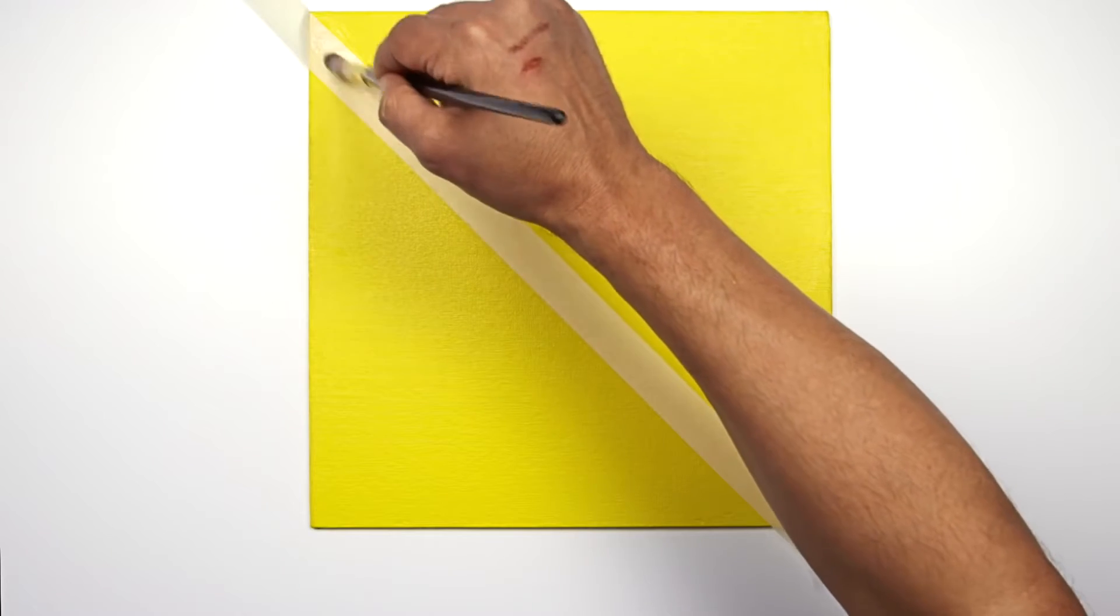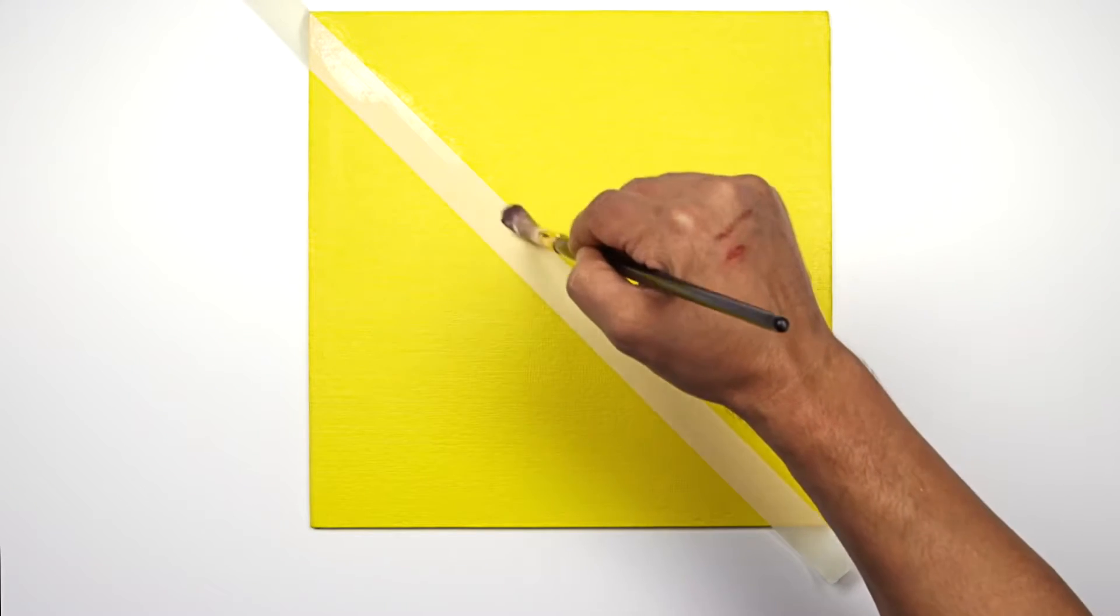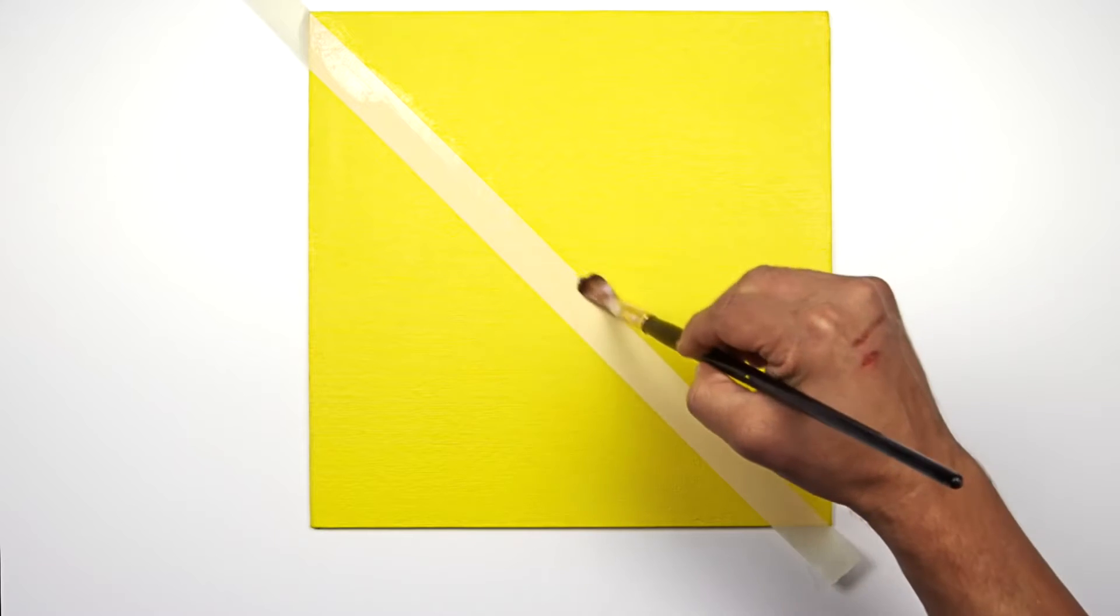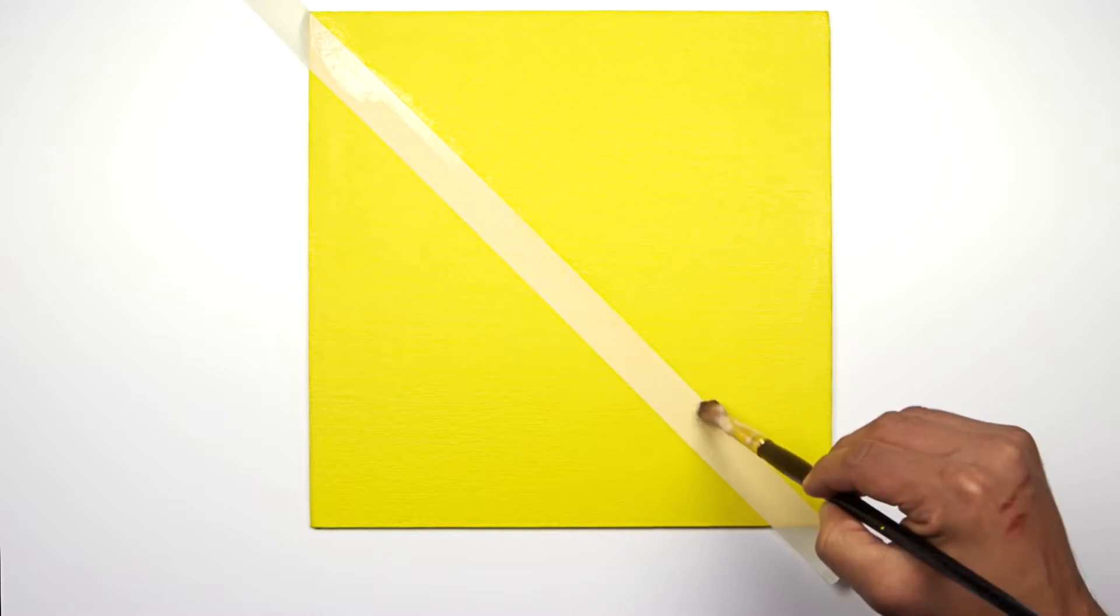To prevent paint bleed, you just want to apply a thin layer of Winsor Newton matte medium all along the edge of the masking tape. Again, you don't want to add too much, but you just have to make sure that you don't miss any area of the masking tape.